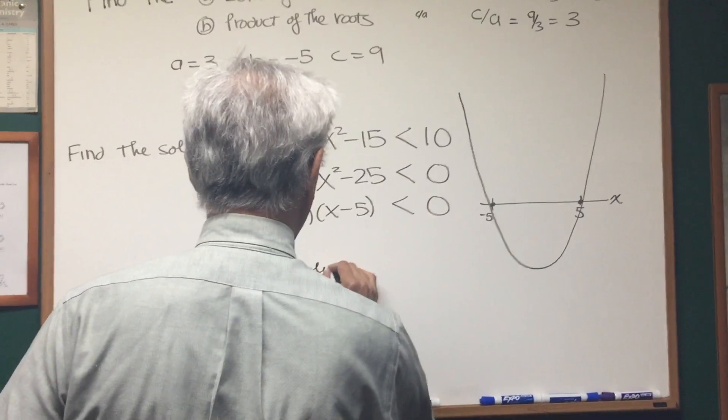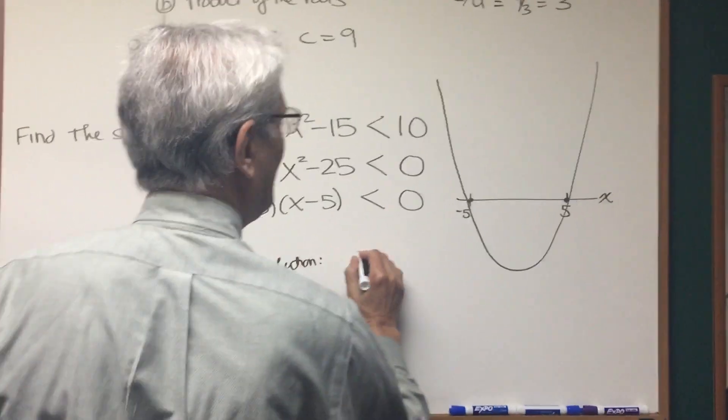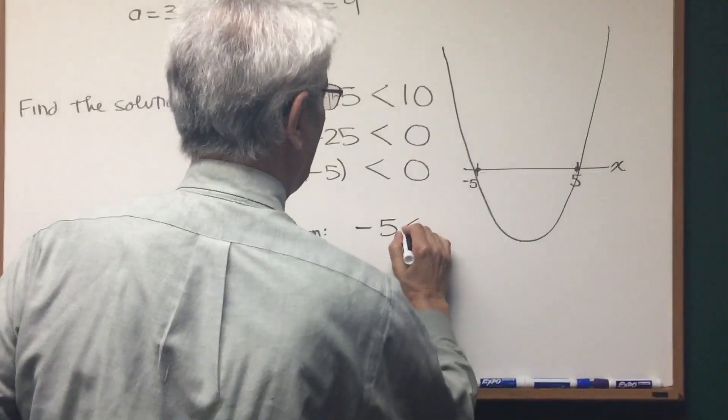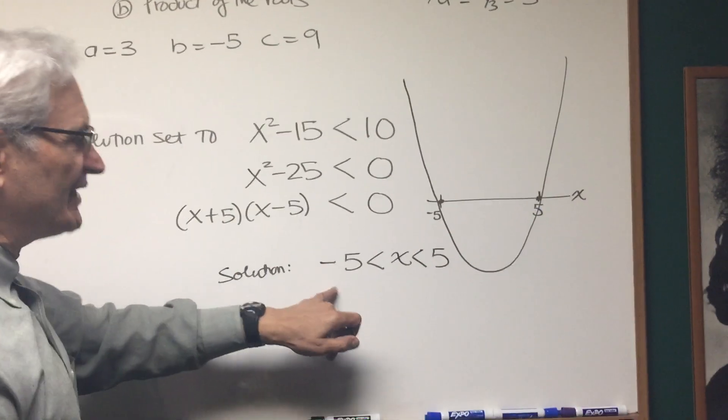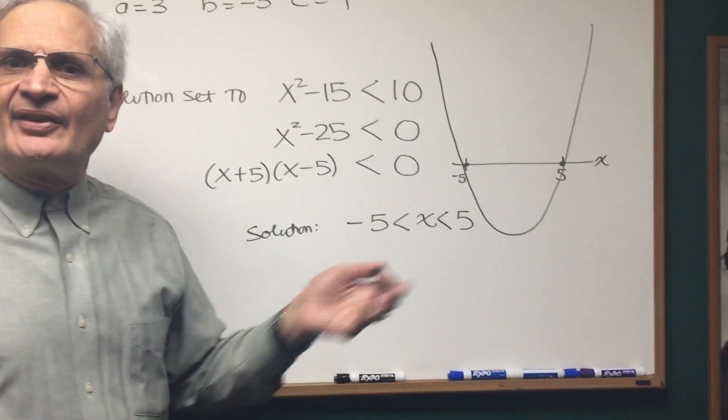The solution is, here is the solution set, the expression is less than zero when x is between -5 and 5, and there's our solution.